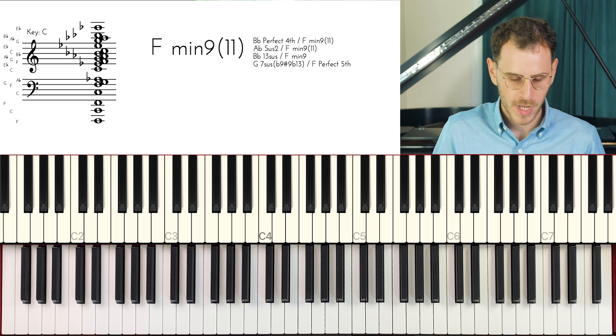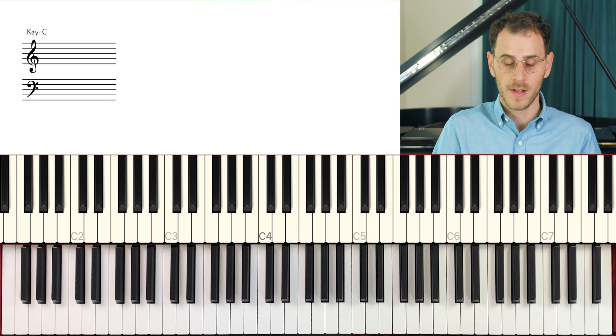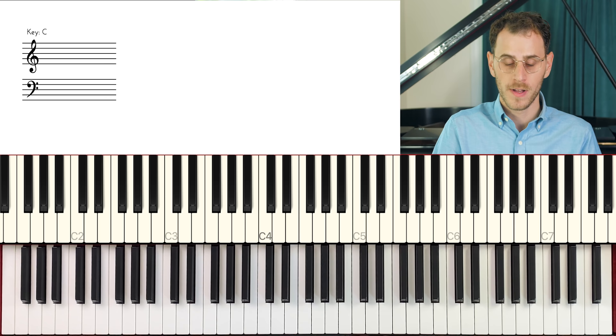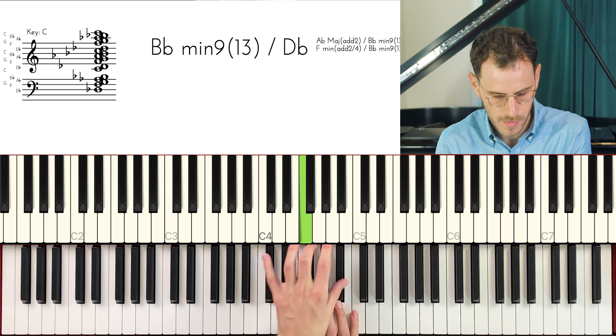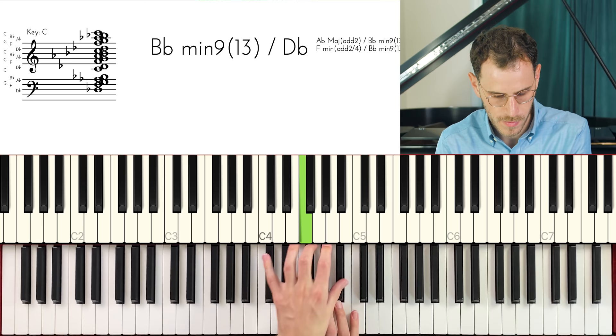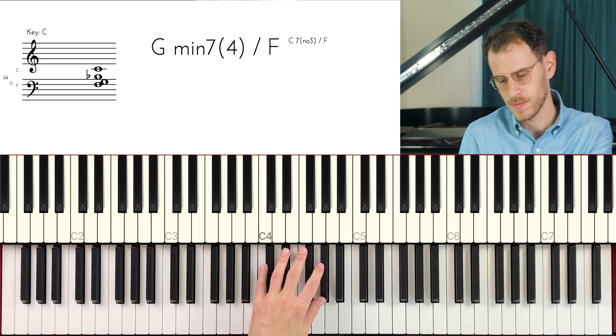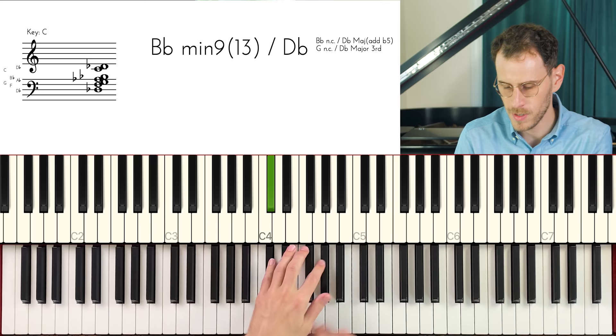So getting into this two-handed stuff, there is so much interesting arpeggiation that you can do. You could also kind of flip the hands, right? So you could do a shape that crosses over. Some of this stuff sounds very impressionistic, right? So in other words, the right hand starts underneath where the left hand ends. Not the cleanest execution, but you see what I mean here, right?